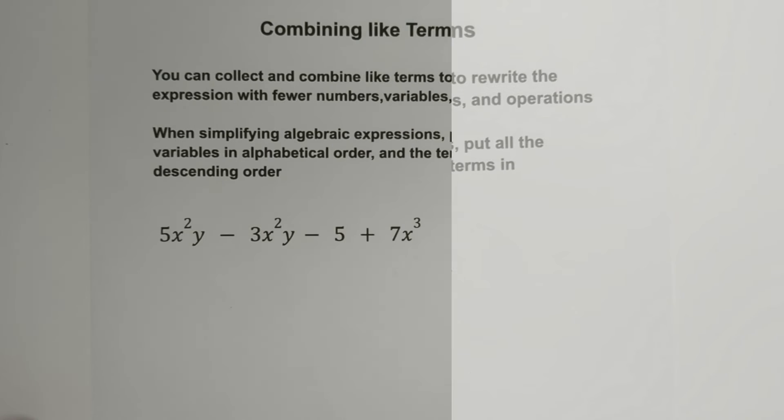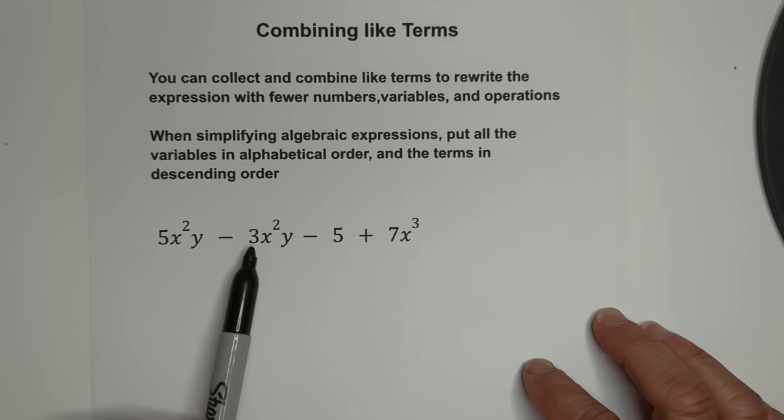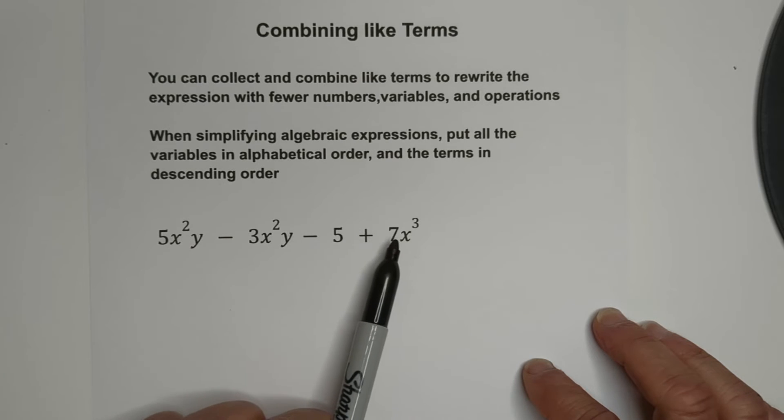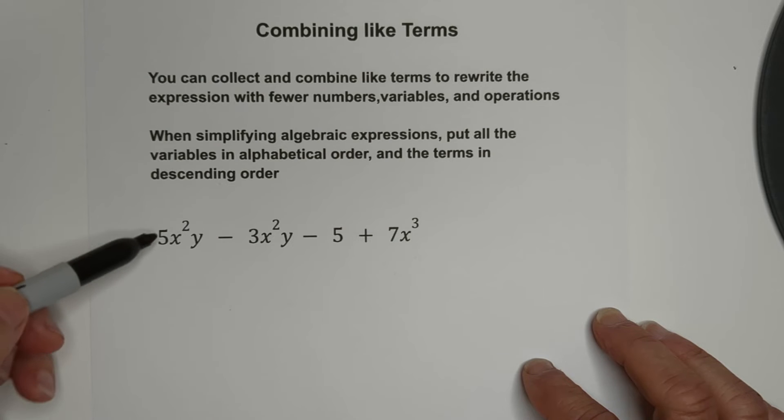Let's work another example. We have five X squared Y, negative three X squared Y, negative five plus seven X cubed. So it looks like the only like terms are right here, the five and the three X squared Y. So let's combine them.